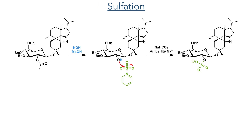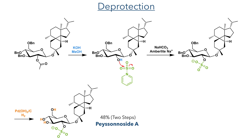With the hydroxyl group at the 2 position now selectively revealed, it was sulfated using sulfur trioxide and pyridine, and in the next step the benzyl ethers were removed using Pearlman's catalyst and hydrogen gas to complete the synthesis of Pasonoside A.